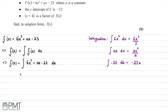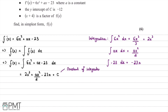We can simplify: 6 divided by 3 is 2, so that term becomes 2x³. Substituting everything in, we have f(x) = 2x³ + ax²/2 - 23x + C, where C is the constant of integration.